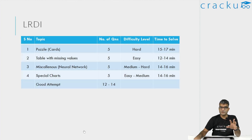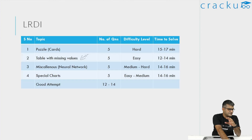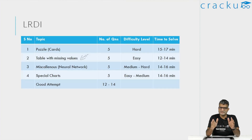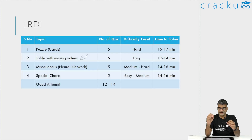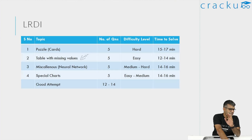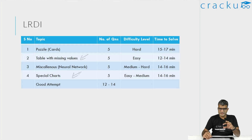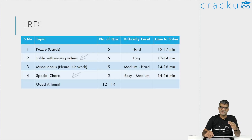Two of the remaining three sets are definitely doable. One involved missing values in a table, related to scores in an athlete tournament — definitely a solvable set that anyone aiming for 90-plus should attempt and get correct in around 10 to 15 minutes. The other doable set was the last one, involving charts. It might take some time but is not very tricky. Anybody who selects these two sets and has solved many practice sets will be able to identify them as easy sets — and they were indeed easy sets.